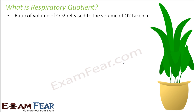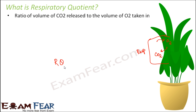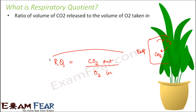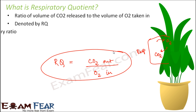So let us see how this parameter is defined. It is the ratio of the volume of carbon dioxide released to the volume of oxygen taken in. Respiration is all about taking in oxygen and giving out carbon dioxide, so: how much CO₂ is given out divided by how much O₂ is taken in — that is the respiratory quotient. This is denoted by RQ and is also known as the respiratory ratio, since it is a ratio of two volumes. It is a dimensionless number.